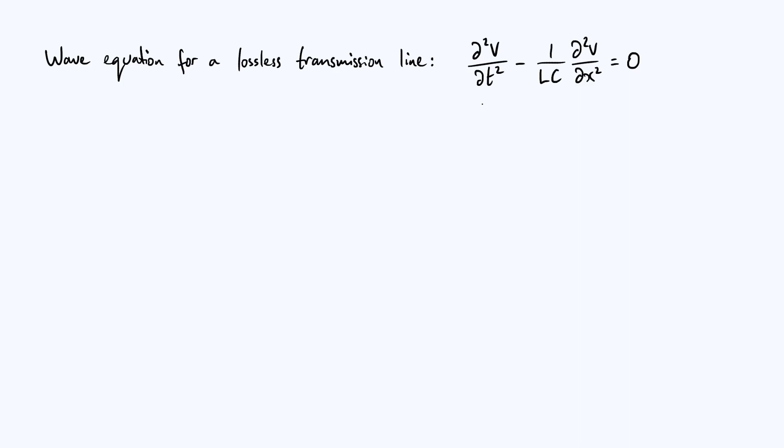A couple of videos back we derived this equation which is the wave equation that describes how voltage and current waves propagate along a transmission line. Well really voltage waves but the current follows the same equation. I've set the resistance of our transmission line to zero here just to simplify things. So these are undamped waves that we've got.